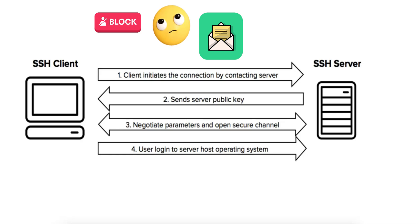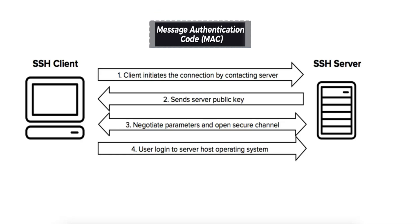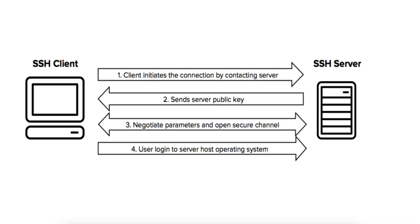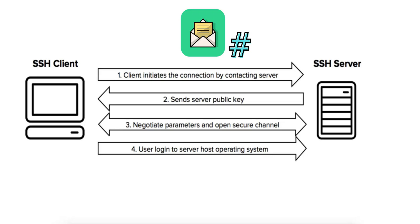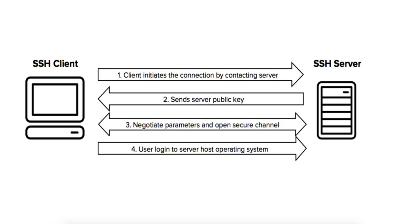In addition to encryption, SSH uses Message Authentication Codes, or MACs, to ensure data integrity. A MAC is a cryptographic hash appended to each encrypted message to verify that the data has not been altered during transmission. Common MAC algorithms include HMAC-SHA-2. The MAC is computed using the symmetric key, so only the client and server can validate it.